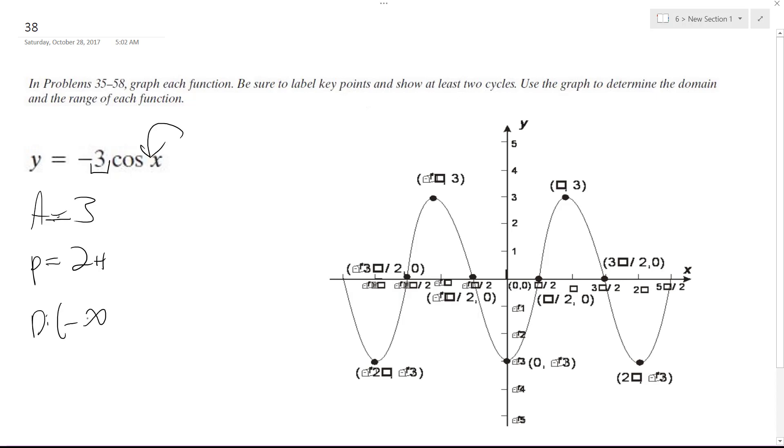The domain is going to be negative infinity to infinity because it can go on forever in either direction, and the range is going to be brackets because it's included, negative 3 to 3.